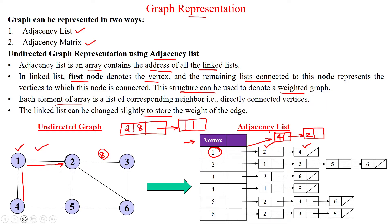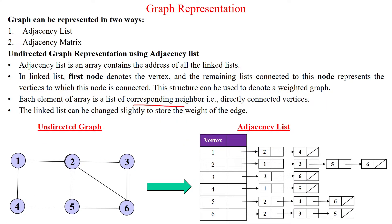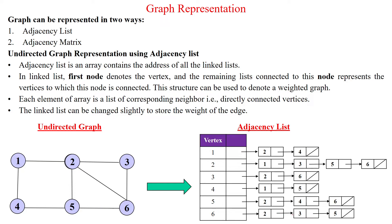Each element of an array in the list corresponds to its neighbor. For example, if you have vertex 2, it is directly connected to vertex 1. Vertex 1 is directly connected to vertex 4. If you take vertex 6, it is directly connected to 2, directly connected to 3, and directly connected to 5. However, there is no direct connection between 2 and 3, or between 3 and 5 — this only indicates that 5 is directly connected to 6. This is the purpose of the adjacency list to represent the graph.